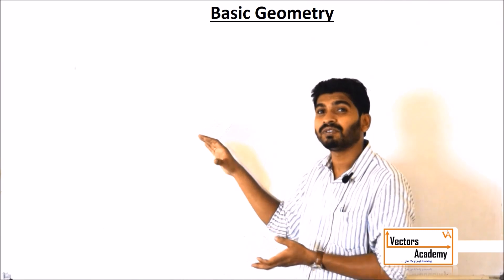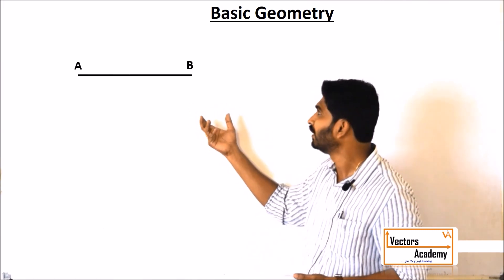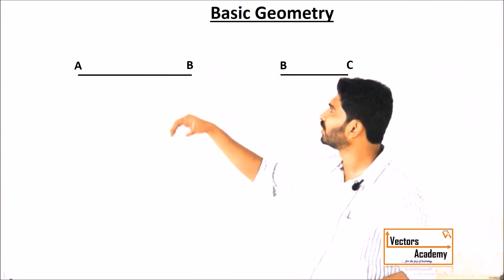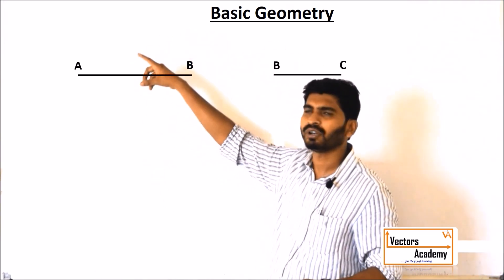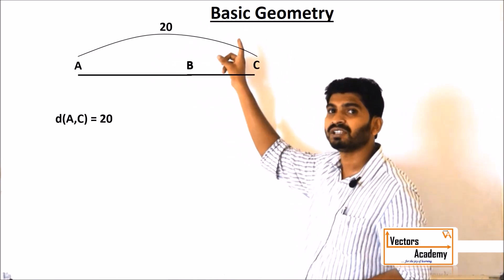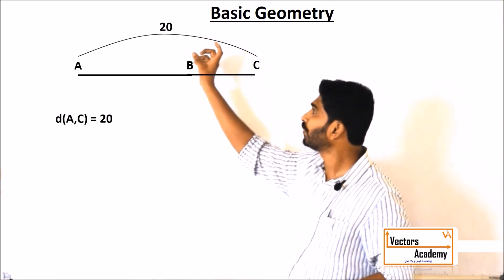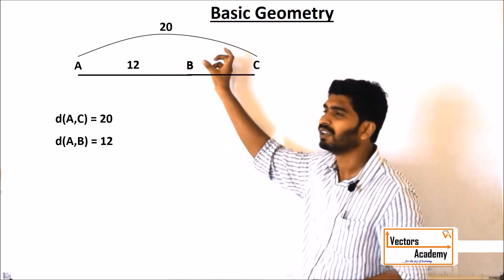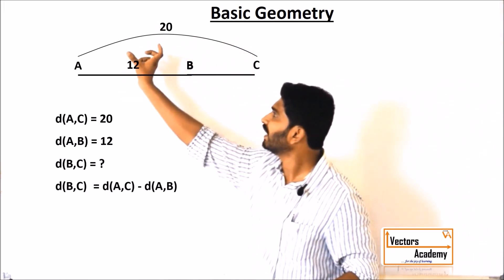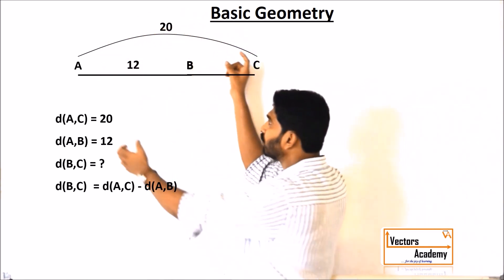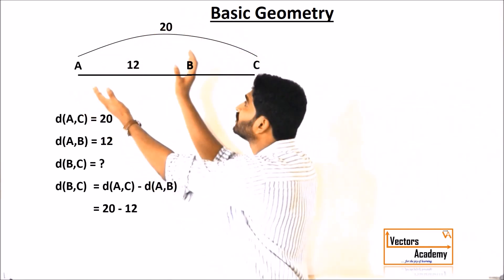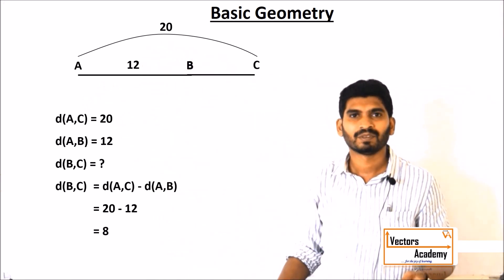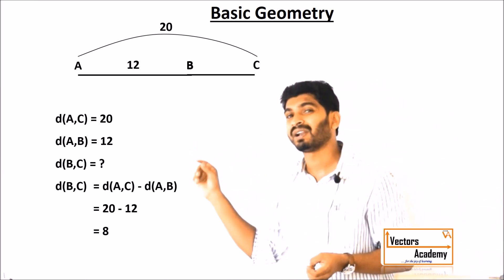Now exactly in the same way, this is how we subtract the segments as well. There are two segments AB and BC which are joined together, and once they are joined, the measurement of AC is given as 20 and the measurement of AB is given as 12. So how do we find BC? We have to subtract AB from AC — the whole distance is 20 minus 12, and that will give you the measurement of BC equal to 8. So this is how you add and subtract the segments.